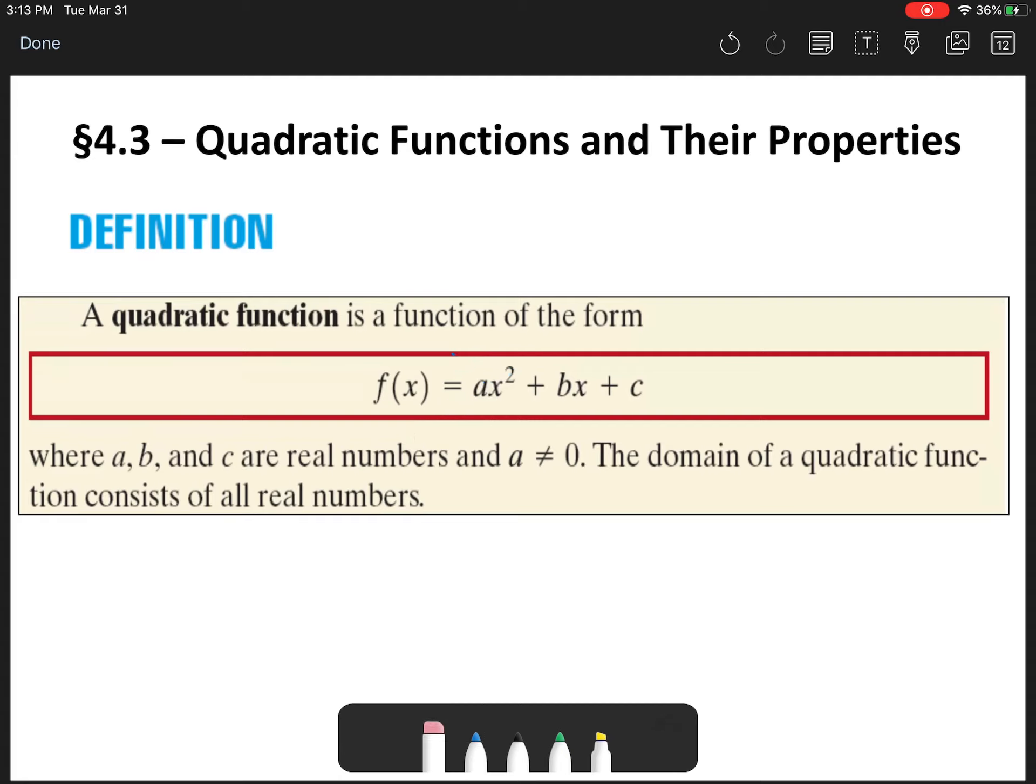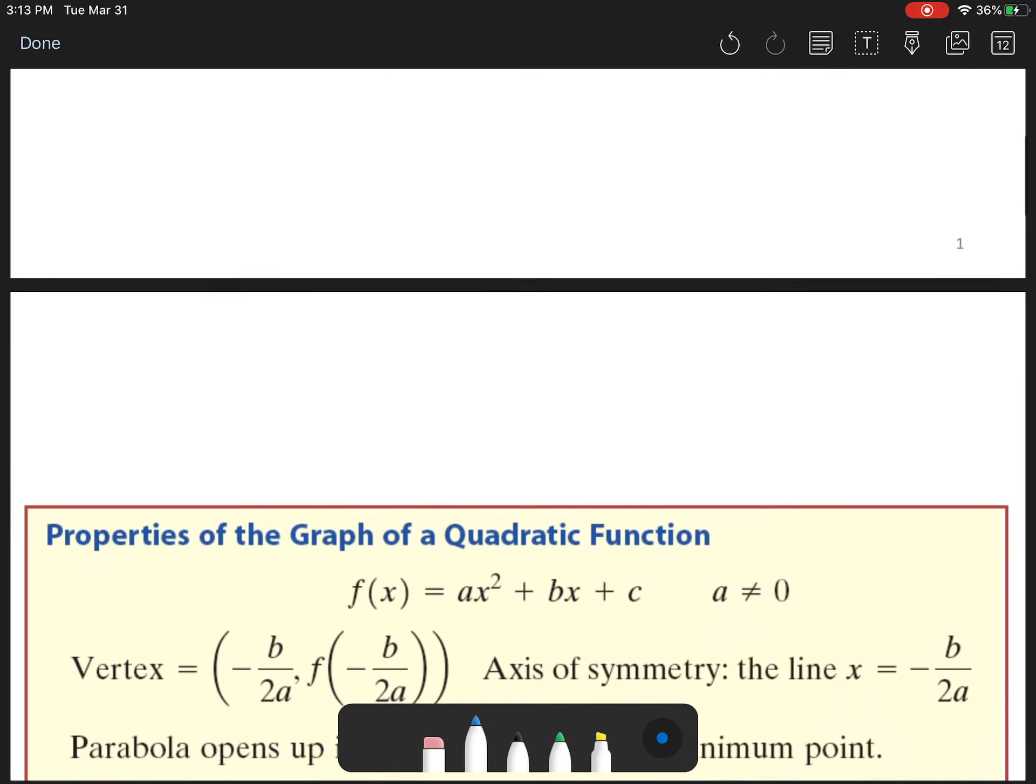All right, a little recap. We know that degree of all quadratic functions - the degree of all quadratic functions have the degree of degree two. The degree is identified by the greatest exponent inside of the quadratic function. All right. Now, a few things about these quadratic functions. We're going to talk about the properties.